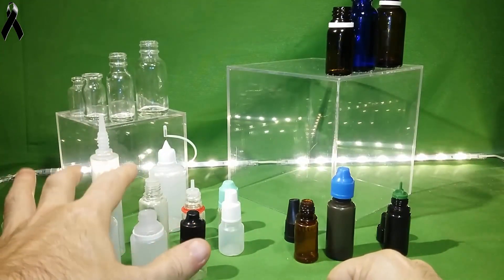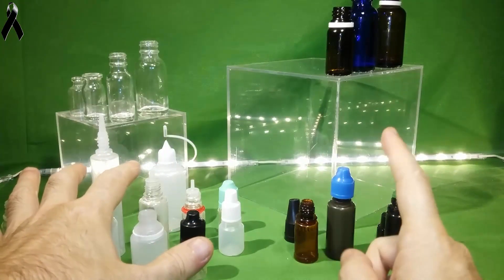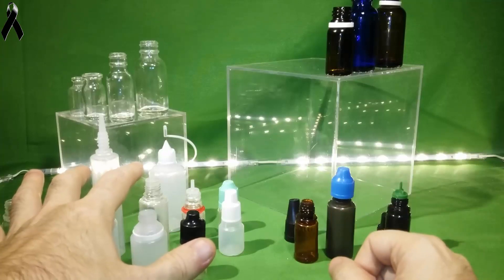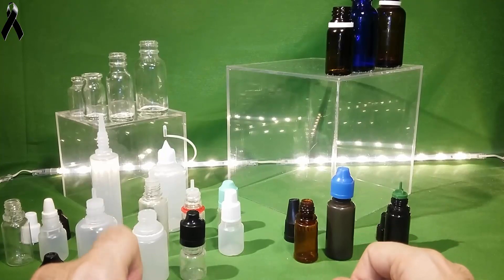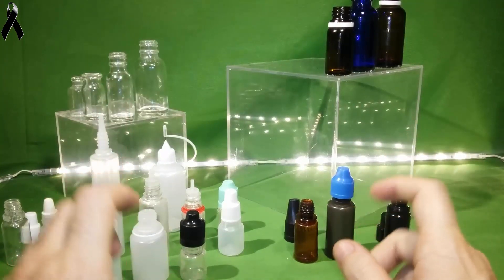Tanto la luz solar como la luz artificial estropean los líquidos o los estropean más rápido. Sin embargo, estando en botes oscuros se estropean con bastante más tiempo. Es preferible tenerlos en botes oscuros que en botes transparentes y evitar siempre que la luz solar o la luz del día les dé.